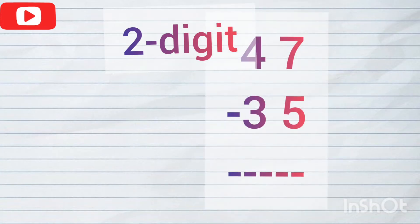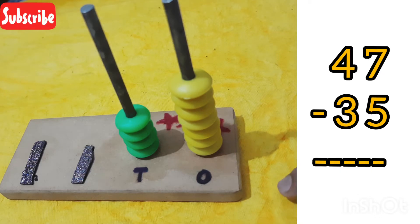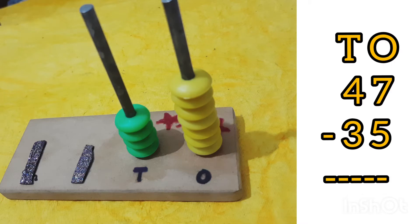Let's subtract 35 from 47 with the help of an abacus. As you can see in this abacus, there are two spikes representing the tens and ones place.